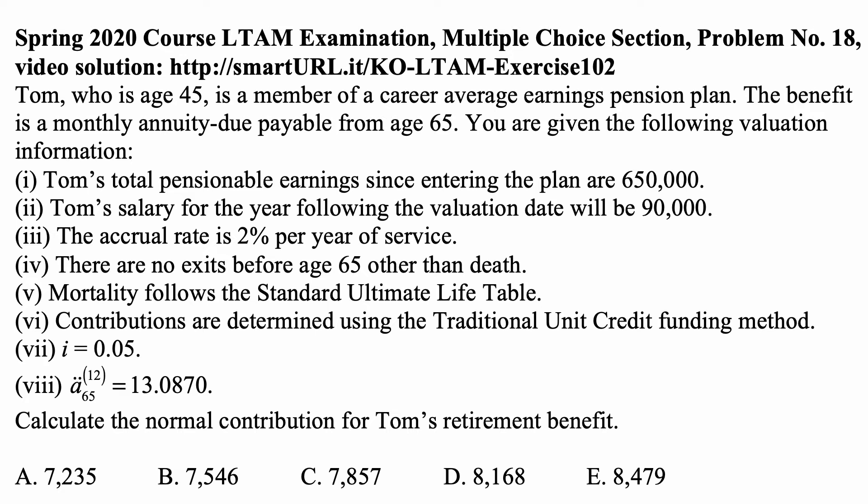Mortality follows the standard ultimate life table. Contributions are determined using the traditional unit credit funding method. The interest rate is 5%, which is the interest rate used in the standard ultimate life table for calculation of actuarial present values. And Ä̈₆₅⁽¹²⁾ is equal to 13.0870.